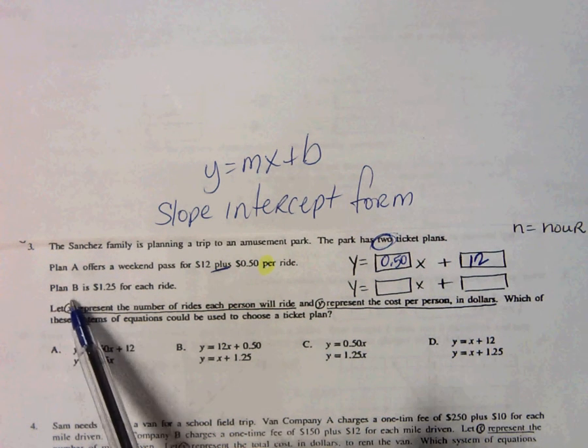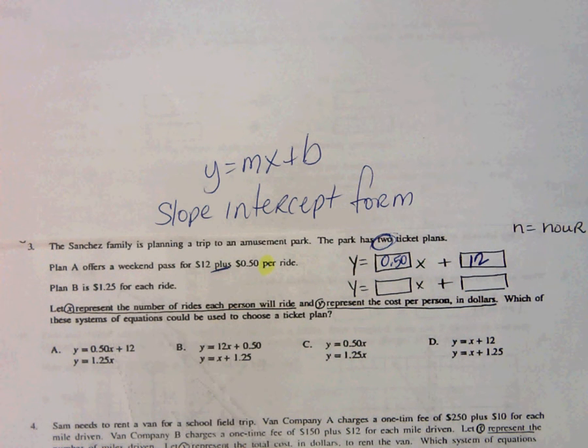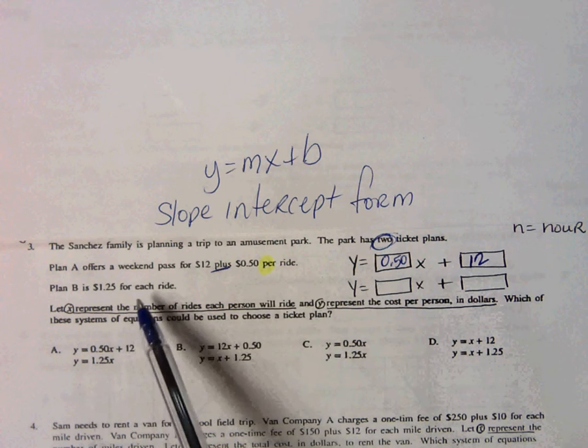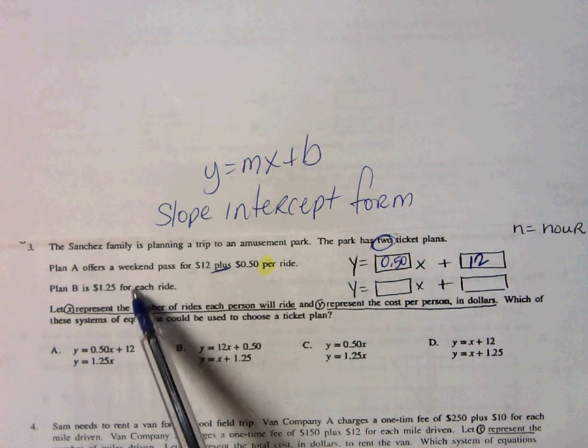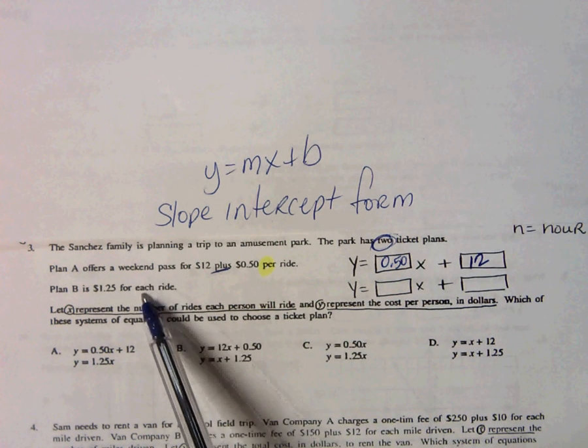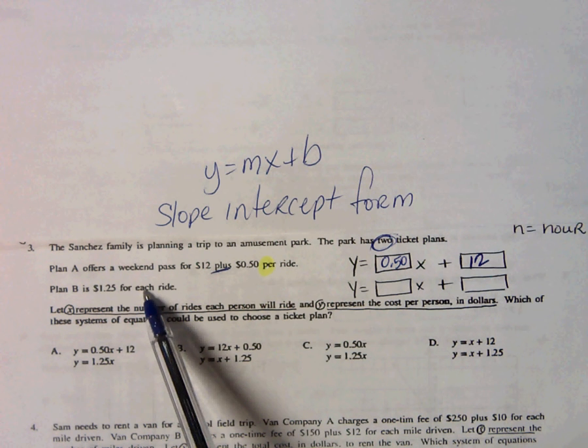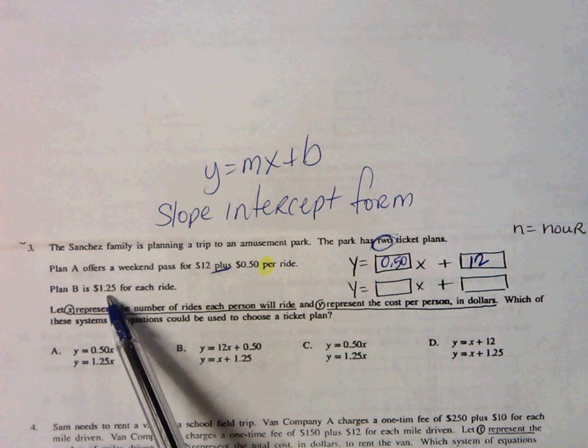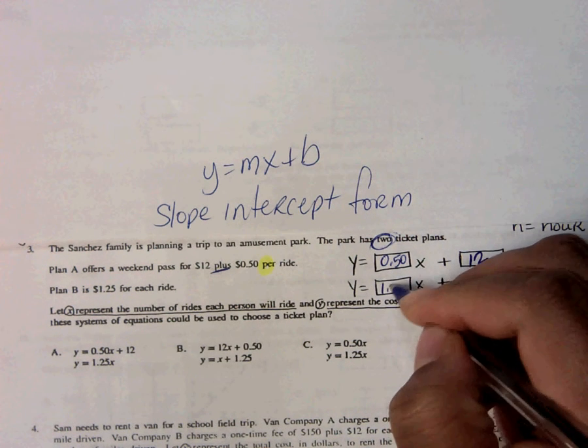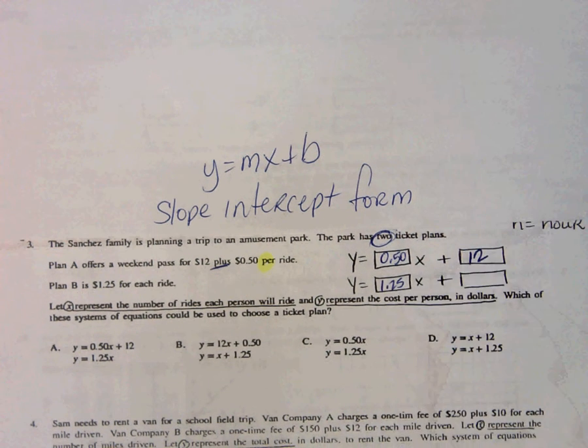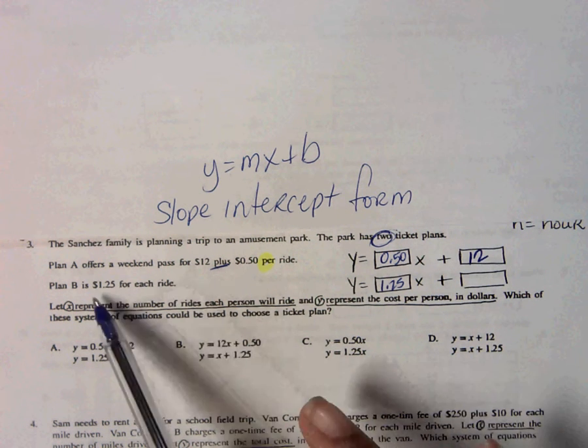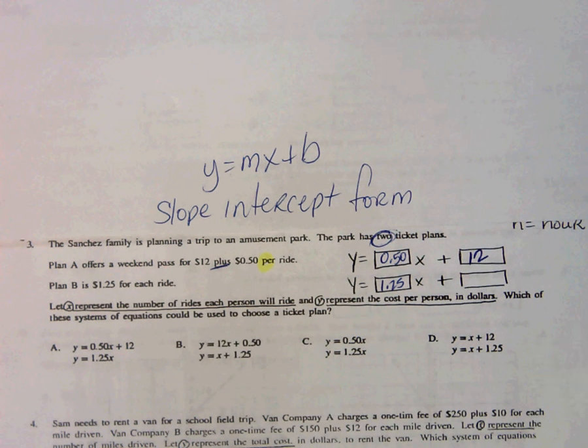Plan B gives us only one number, and I know that may confuse you, but do you see our key word? Yes, it is each. That means $1.25 is the slope. That's correct. We do not have a y-intercept for this in the problem given, so we know it is zero.